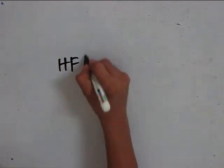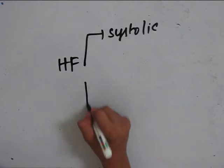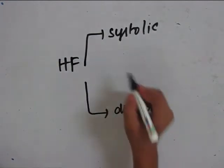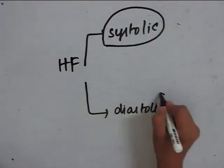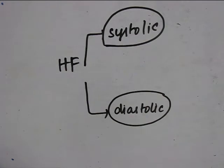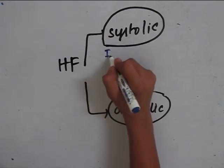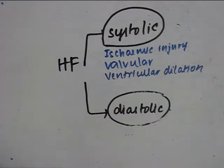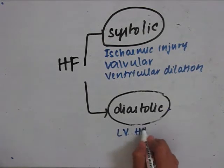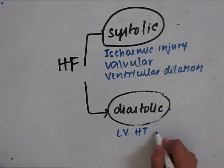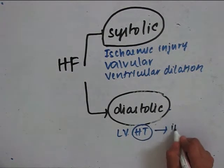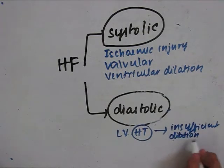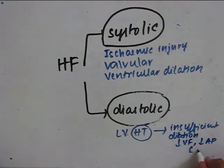Heart failure can be either systolic or diastolic — that is, the heart can fail either during contraction or relaxation. Heart failure is systolic in ischemic injury, valvular disease, and ventricular dilatation. Heart failure is diastolic in left ventricular hypertrophy. In left ventricular hypertrophy, due to the hypertrophy, there is insufficient dilation, so there is decreased ventricular filling, decreased atrial pressure, and decreased organ perfusion.